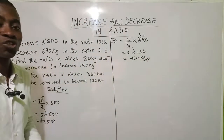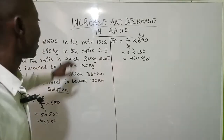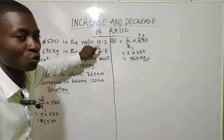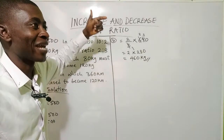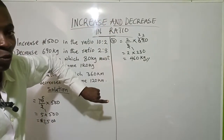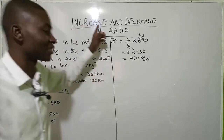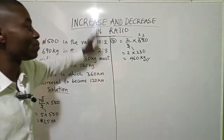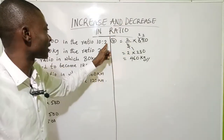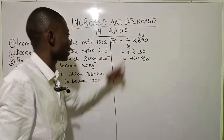So again, the clue here is that when you are decreasing, the smaller ratio should be on top while the bigger ratio would be in the denominator. But when you are increasing, the bigger ratio would be in the numerator or on top, while the smaller ratio would be in the denominator or bottom.